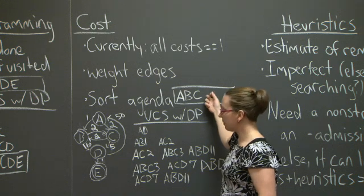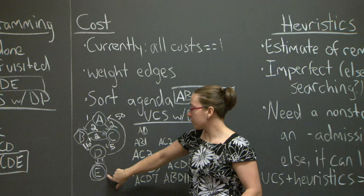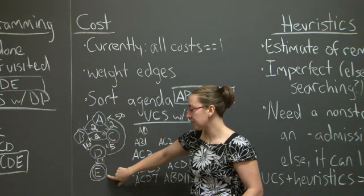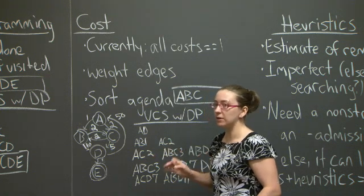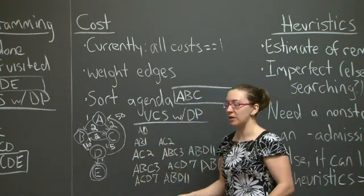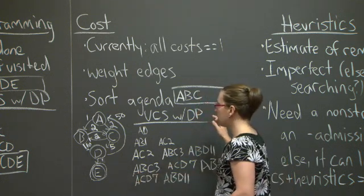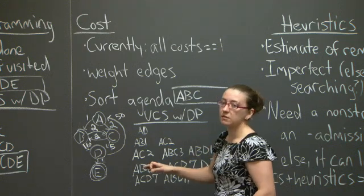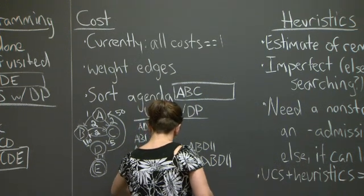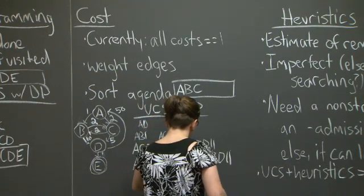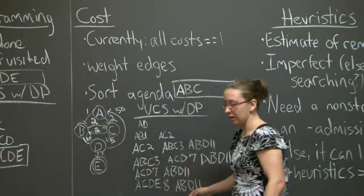D is not in our expanded list. When we expand D, we have one child node E. Because we're working with cost and heuristics, we do not actually evaluate the goal test when we visit a node, we evaluate it when we expand a node. So I am going to add A, C, D, E to my agenda. It's going to have cost 8. And ABD 11 is still going to hang out here at the back of the priority queue.